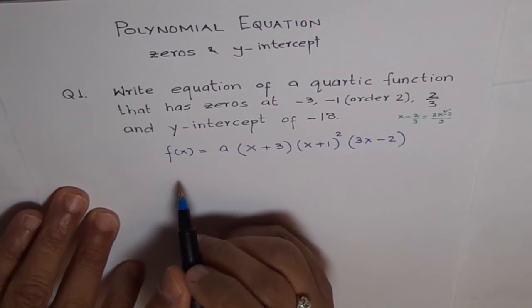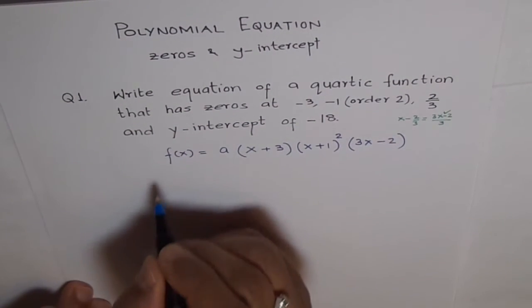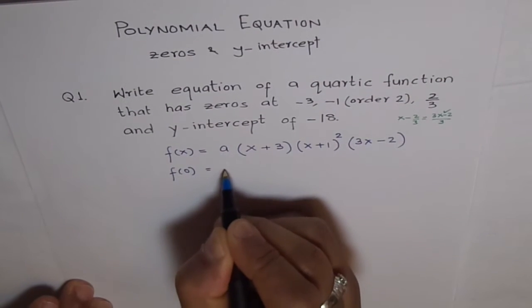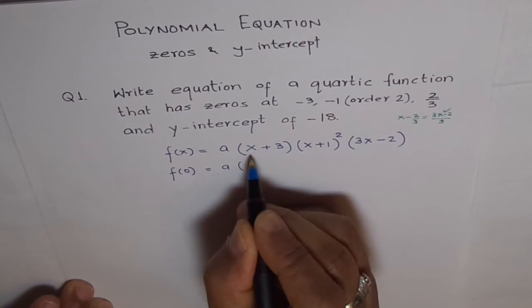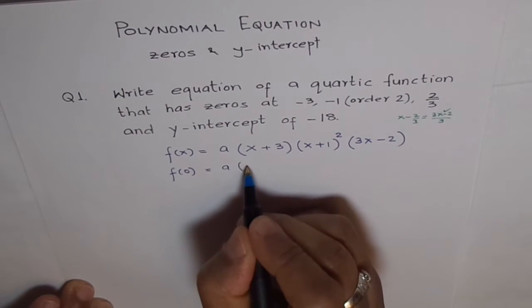Now, y-intercept is always at x equals 0. Therefore, f of 0 equals A. We will replace this x with zeros.